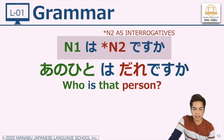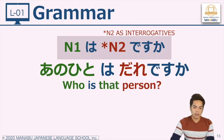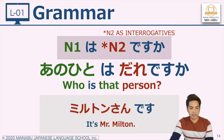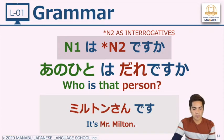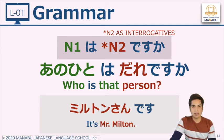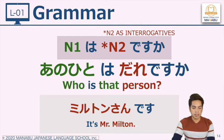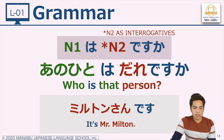The particle ka is added to a sentence to make it a question. Now we will use Noun 2 as interrogatives, using the word 'dare.' Dare in English means 'who.' We will describe a person: ano hito wa — ano hito wa dare desu ka — who is that person? If we translate one by one: ano hito wa — that person — dare desu ka — is who. We will answer with a name: Mirton-san desu. Mirton is not Japanese, so we write it in katakana. Mirton-san desu — it's Mr. Milton.